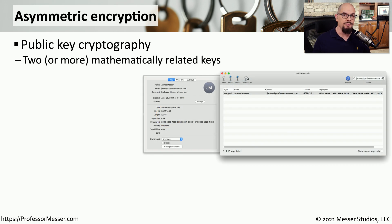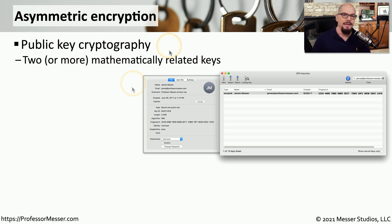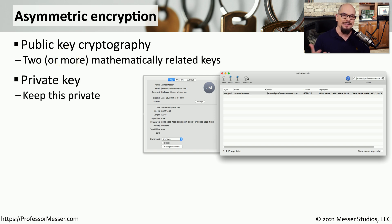Unlike symmetric encryption, where there is a single key, with asymmetric encryption there are multiple keys. You'll sometimes hear this referred to as public key cryptography because there is a public key and a private key. In some situations there can be more than two keys, but for our examples today we'll deal with two keys — a public key and a private key. The private key, as the name implies, is a key that only you have access to; it is private because nobody else knows what that key is.